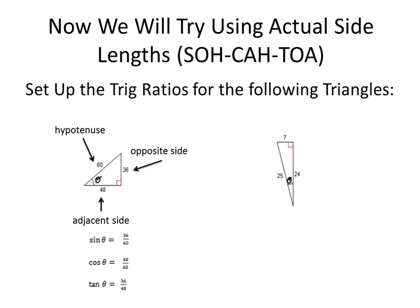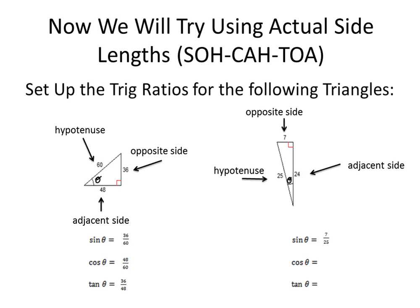Let's look at another triangle. The hypotenuse is 25, the opposite side is 7, and the adjacent side to theta is 24. Sine of theta is opposite over hypotenuse, so 7 over 25. Cosine is adjacent over hypotenuse, so 24 over 25. Tangent is opposite over adjacent, so 7 over 24.